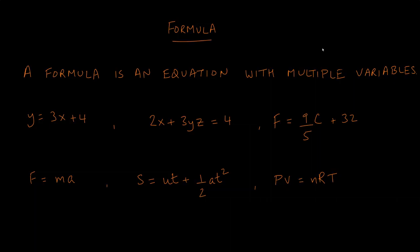The topic of this section is formulas. A formula is an equation with multiple variables in it. For example, y = 3x + 4 is an equation with multiple variables, making it a formula. Similarly, 2x + 3yz = 4 is a formula. F = (9/5)C + 32 is the formula to convert Celsius to Fahrenheit, or Fahrenheit to Celsius.